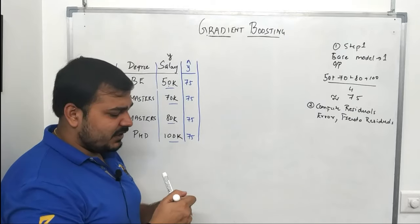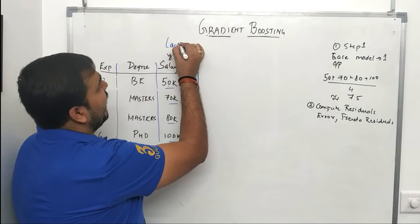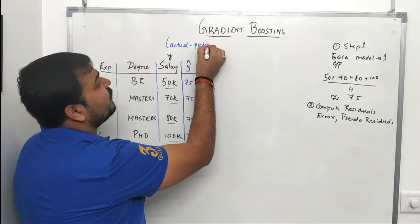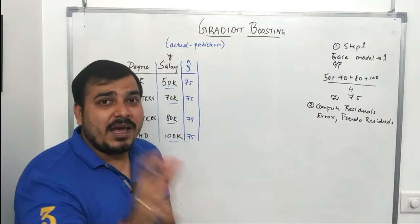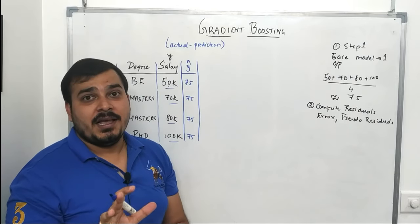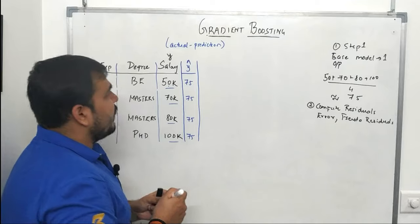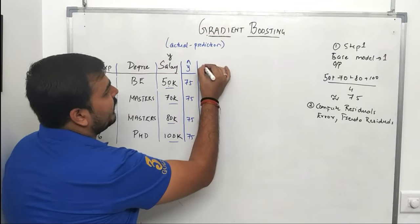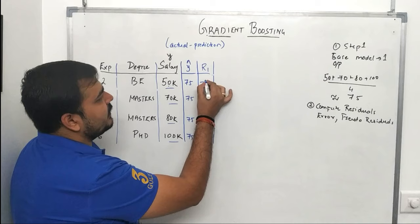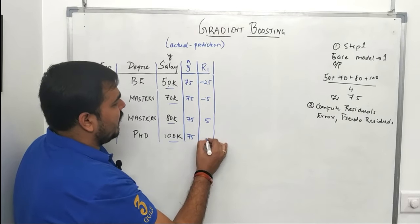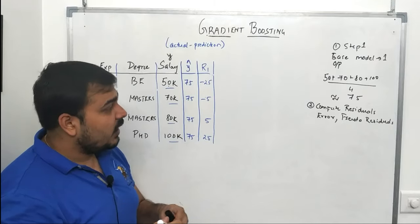In this example I'll use a simple loss function: I subtract the predicted value from the actual value to compute the residuals. I'll write a new column r1 for residual one. Subtracting: 50 minus 75 is minus 25, then minus 5, plus 5, and plus 25. These are my r1 residual errors from the first phase.